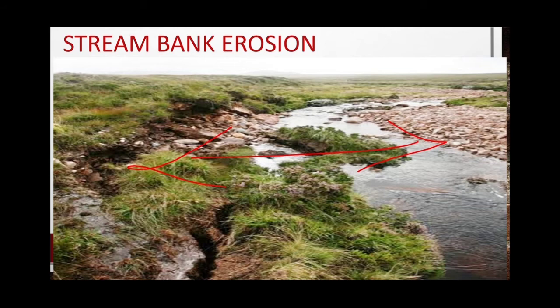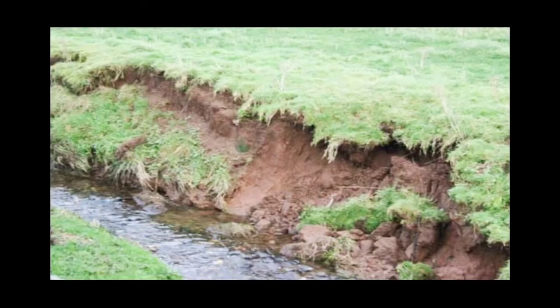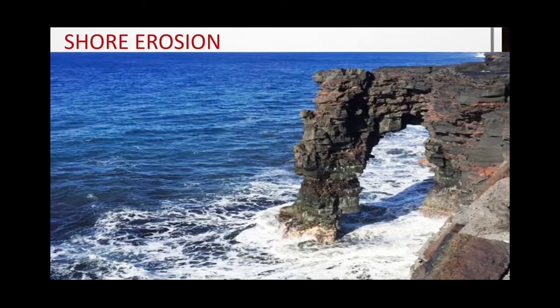Here is another picture of stream bank erosion. You can see that soil was once present here but has been eaten up by the erosive action of water and the bank has been eroded. This is another picture of stream bank erosion.